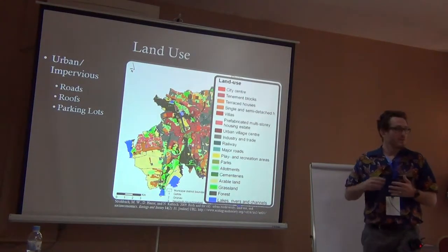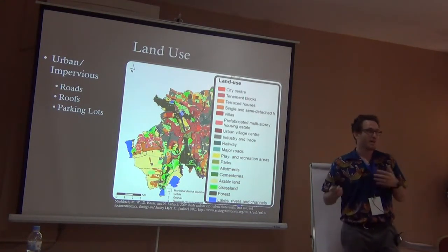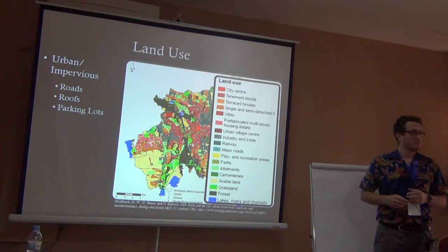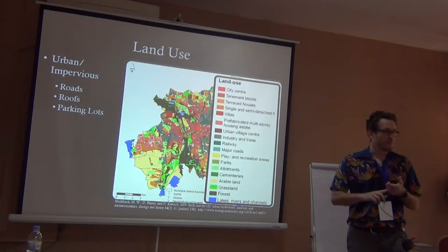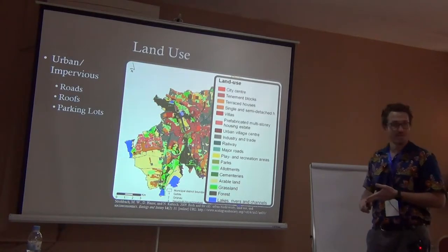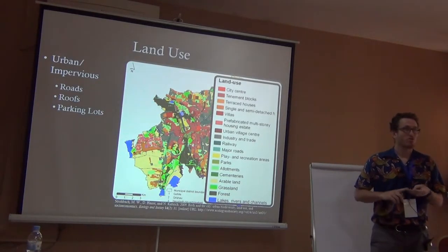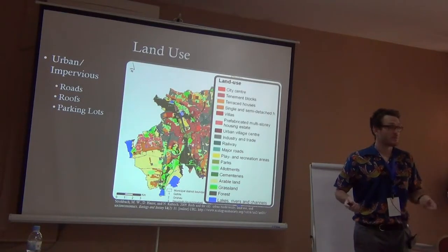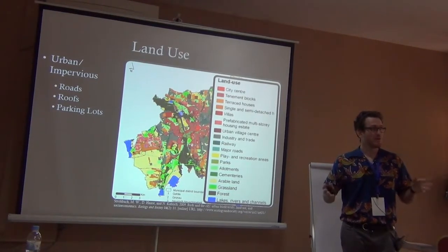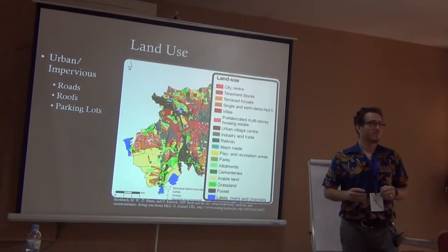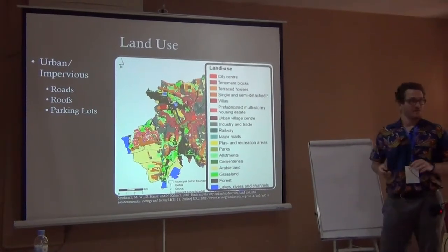Whereas land use gets much more complicated, because humans use the land in a lot of different ways. In urban areas, we use it for roads, buildings, and parking lots — those are all impervious surfaces. So it's one cover type — an impervious surface — but it has many different land uses.